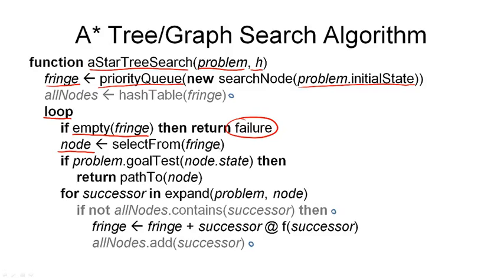And what we do next is we perform our goal test on the state contained in that node. And if this goal test succeeds, that means we have found a solution, and then we can simply return the path to this node in the search tree.